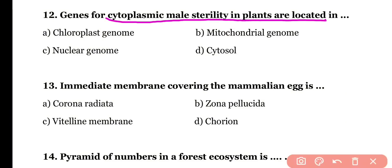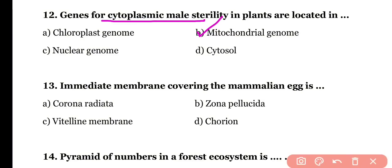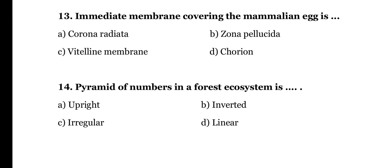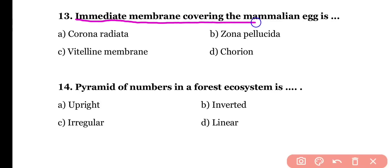Question number twelve: genes for cytoplasmic male sterility in plants are located in (a) chloroplast genome, (b) mitochondrial genome, (c) nuclear genome, or (d) cytosol. The correct answer is option B — genes for cytoplasmic male sterility are located in the mitochondrial genome.